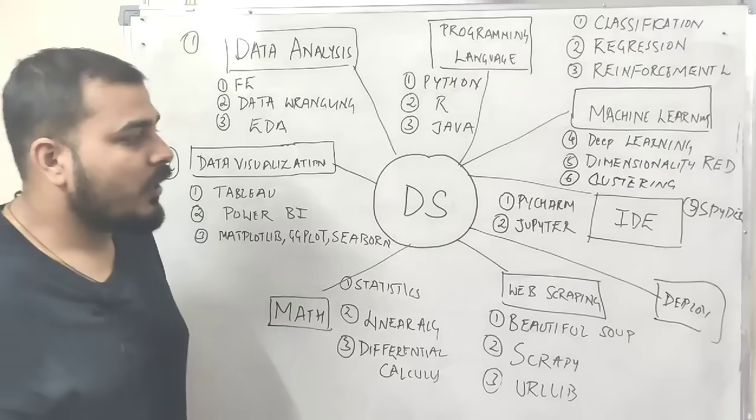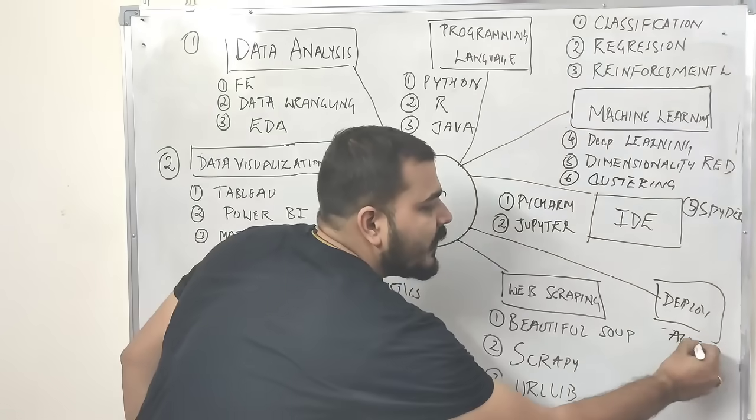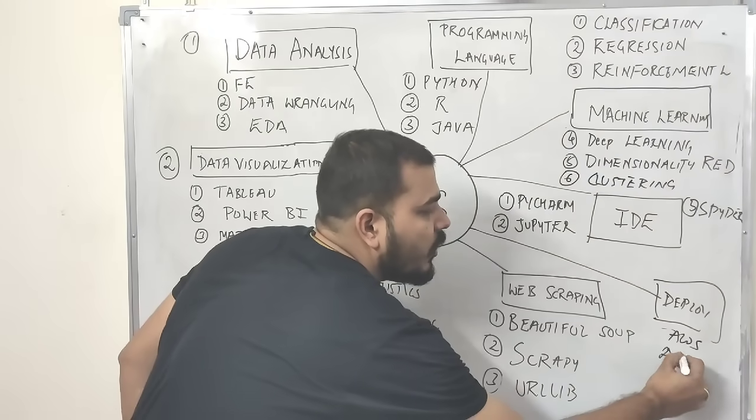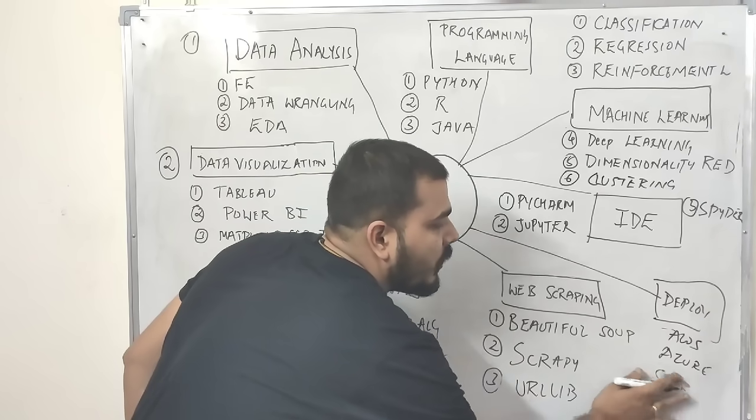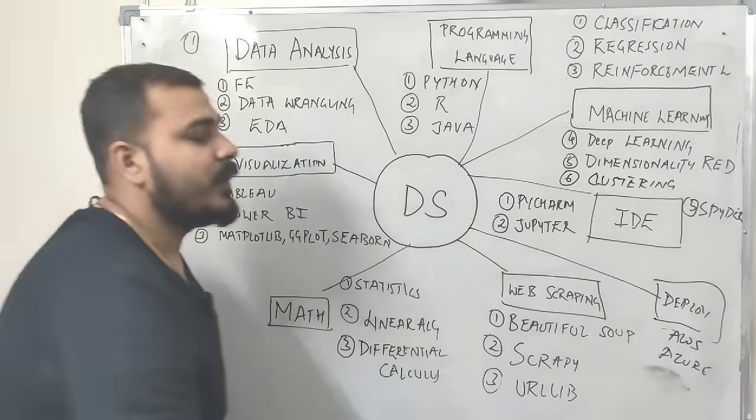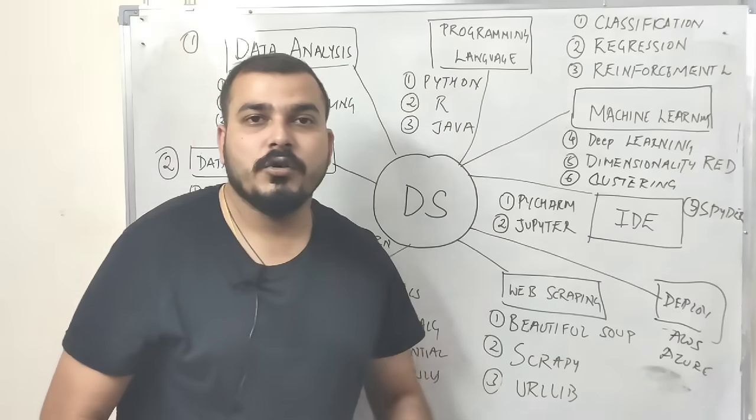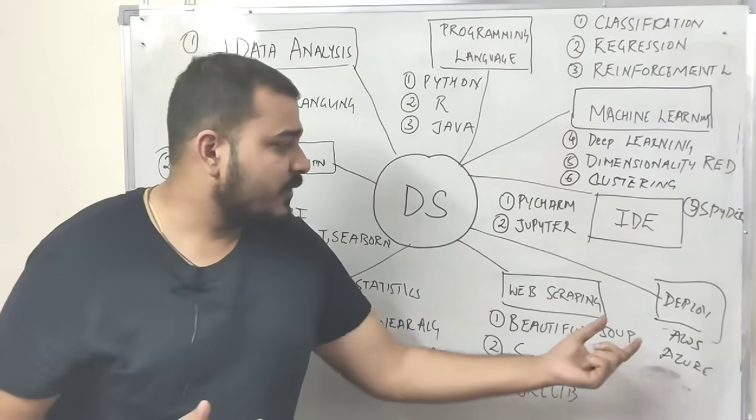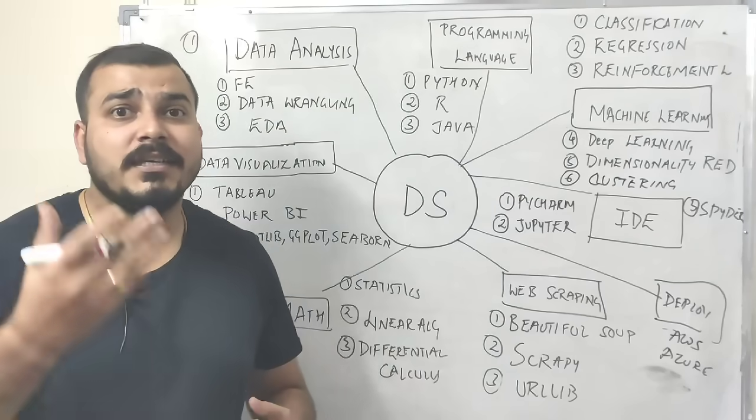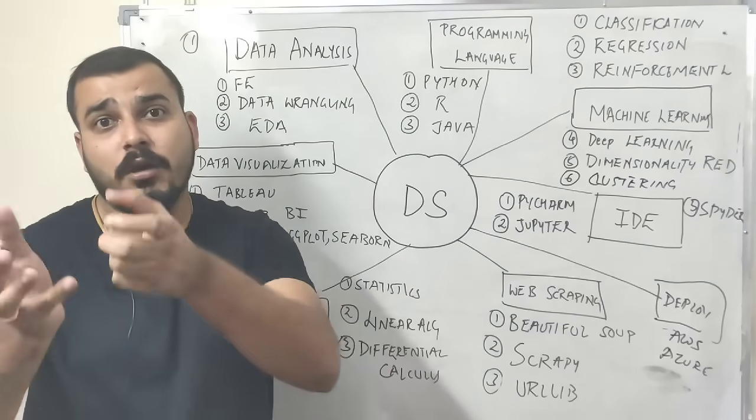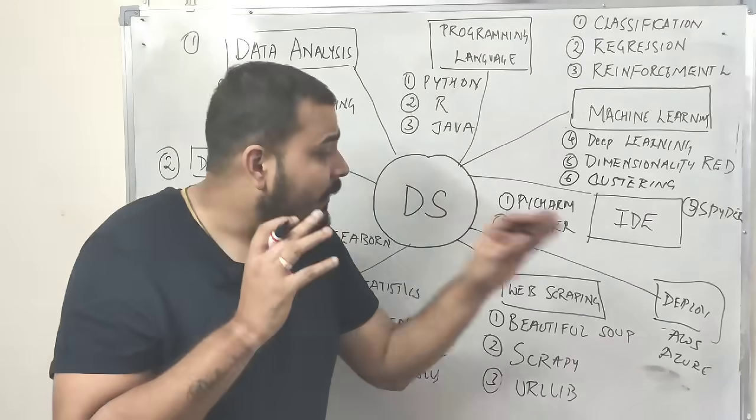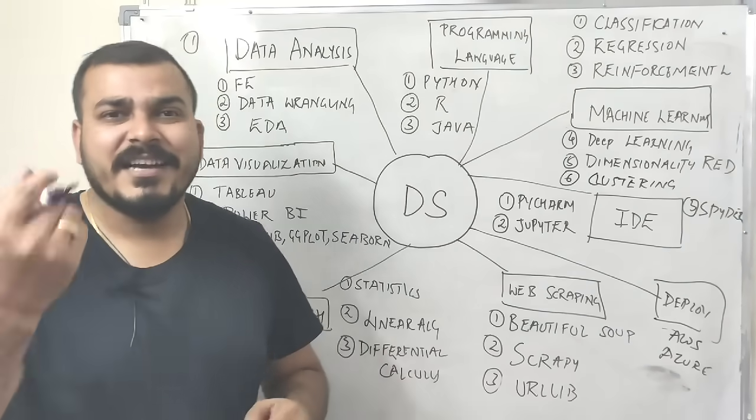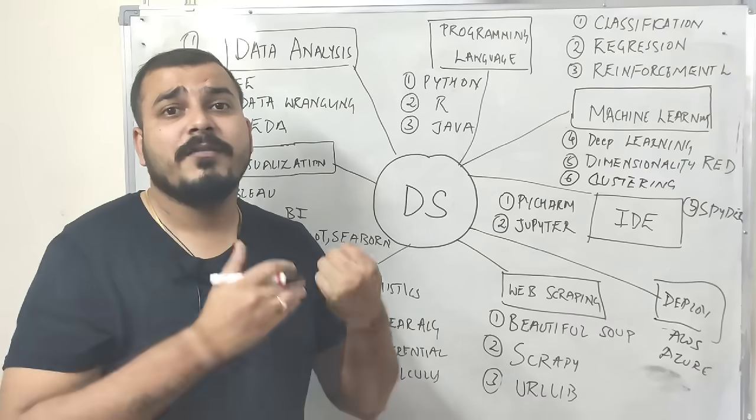In this deployment, you're going to use different tools like AWS, Azure, or you may use Spark—sorry, it should not be Spark because Spark comes into big data. So AWS, Azure—if I take an example of AWS, you may take an EC2 instance and deploy a Flask model there. You should integrate your model with a Flask framework and try to upload it in AWS and create an API so it can be consumed in the front end.